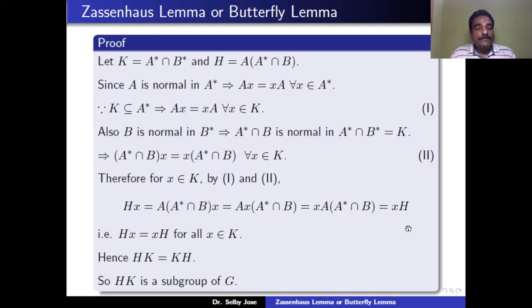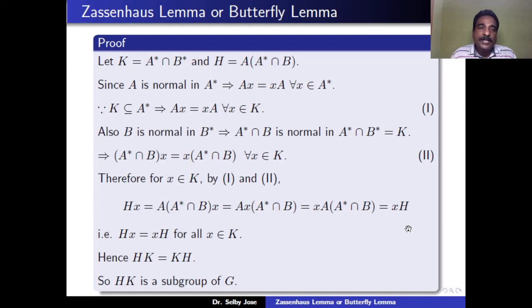Also, B is a normal subgroup of B*, so A* ∩ B is a normal subgroup of A* ∩ B*. But A* ∩ B* is the same as K. Therefore, A* ∩ B is a normal subgroup of K. By definition, for all H in K: (A* ∩ B)X = X(A* ∩ B), since A* ∩ B is normal in K. This is equation (2).